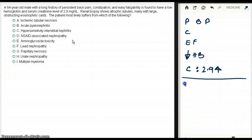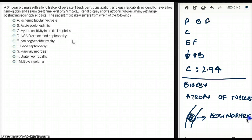Now we're going to be talking about biopsy. We're going to see atrophy of the tubules. Many with large obstructing eosinophilic casts. So these tubules are going to be obstructed with eosinophilic casts. The patient most likely suffers from which of the following? Now we have to go and make the diagnosis.